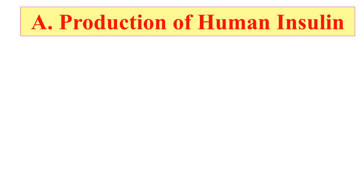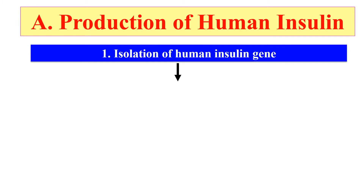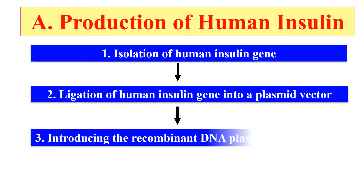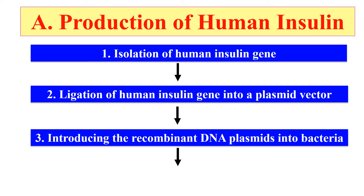Now let's discuss how human insulin was produced in E. coli. These are the steps used for the production of human insulin. First, obtaining the human insulin gene — the gene for human insulin was isolated by making the cDNA, or complementary DNA, copy of the messenger RNA for human insulin. In the next step, this human insulin gene was joined with a plasmid vector. After joining with the plasmid vector, this recombinant DNA plasmid, which now contains the gene for human insulin, is transferred into the bacteria E. coli.